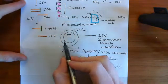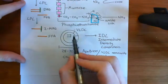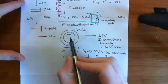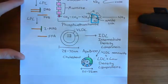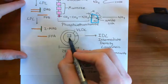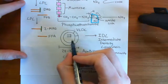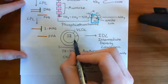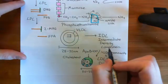These VLDL molecules are very large lipoprotein molecules with a huge great store of triacylglycerols within their lipid core. As they deliver these triacylglycerols to the skeletal and cardiac muscle tissues, you're going to gradually deplete the triacylglycerol content. As you deplete the triacylglycerol content, they become known as intermediate-density lipoproteins.